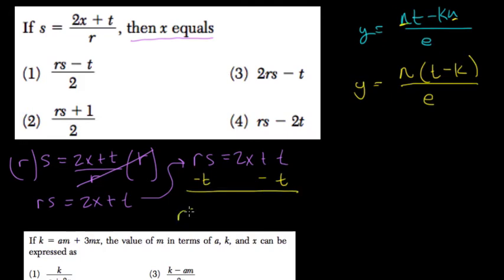And now we get rs minus t, whatever that is exactly. We don't know. t minus t is 0 equals 2x.